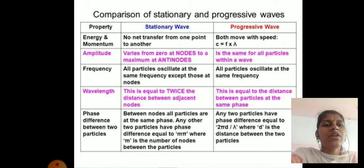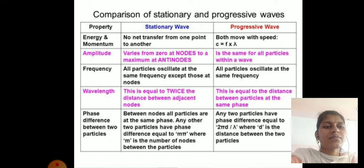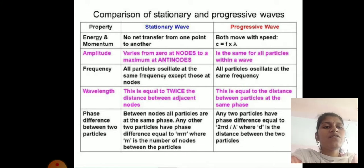The amplitude of stationary waves varies from zero at a node to a maximum at anti-nodes. The amplitude of progressive waves is the same for all particles. The wavelength of stationary waves equals twice the distance between adjacent nodes; for progressive waves, it equals the distance between particles at the same phase.